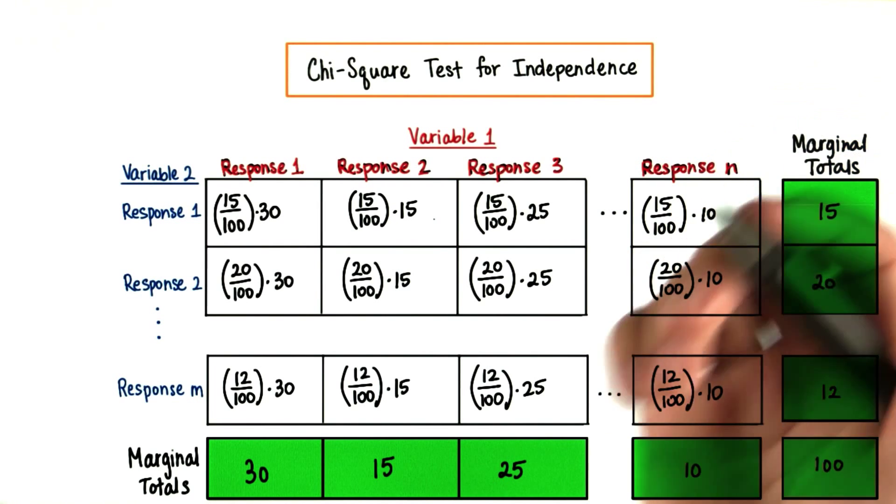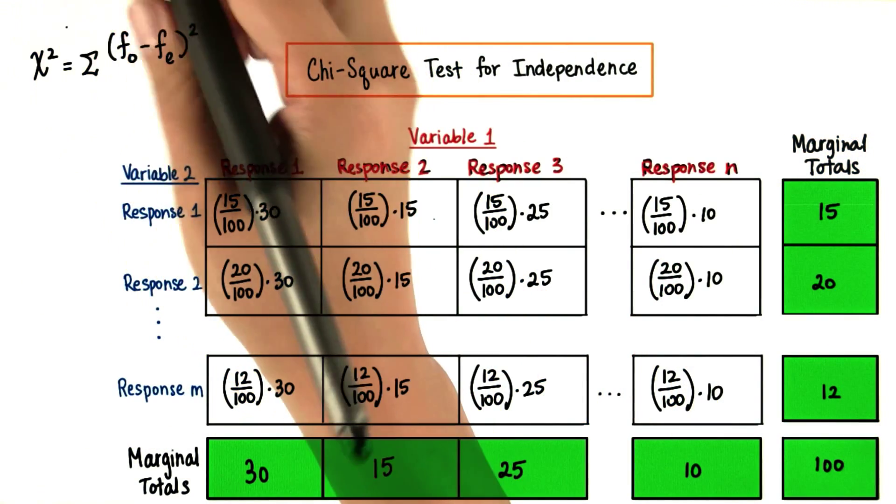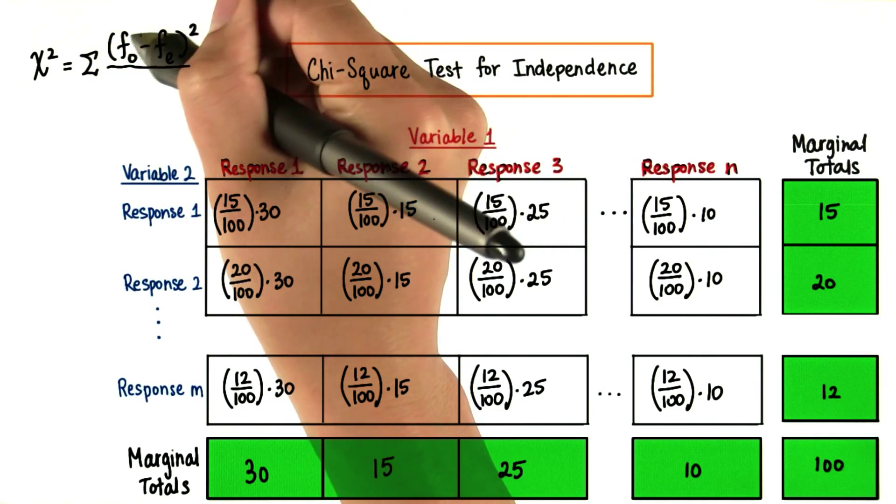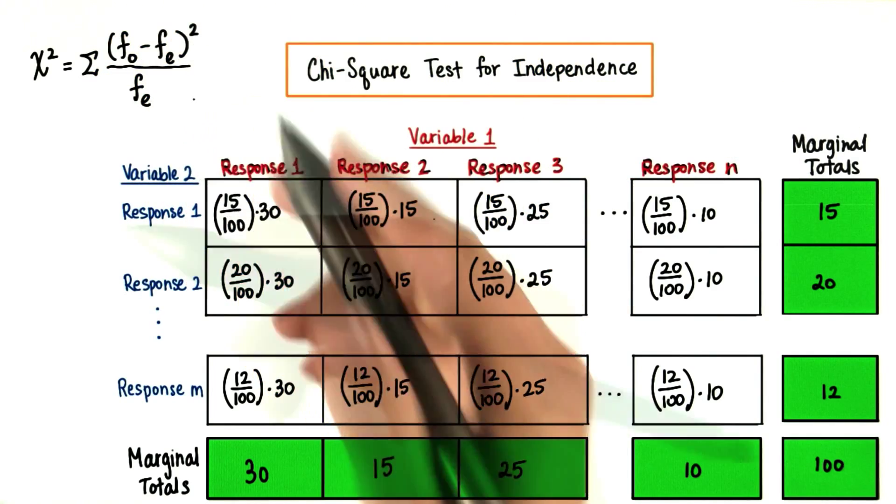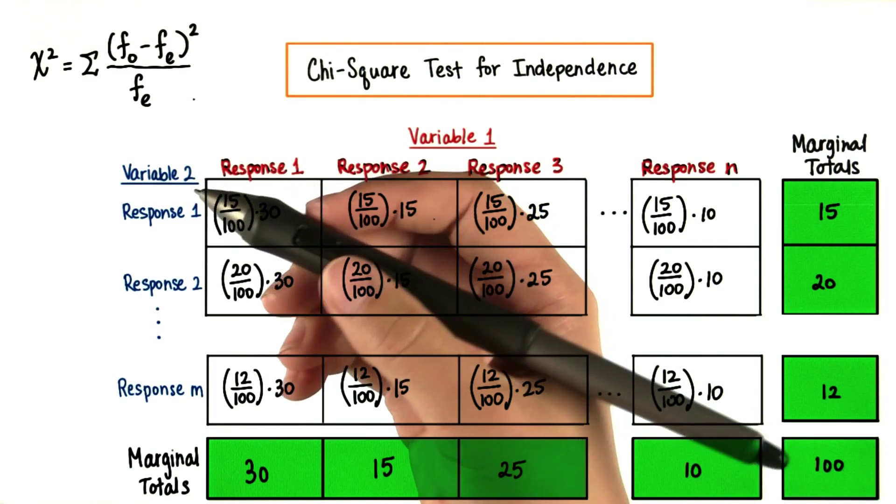And then, for both goodness of fit and independence chi-squared tests, we calculate the chi-squared statistic by taking the sum of each square difference between the observed and expected values divided by the expected value. Then, we can use the chi-squared table to determine if our results are statistically significant.